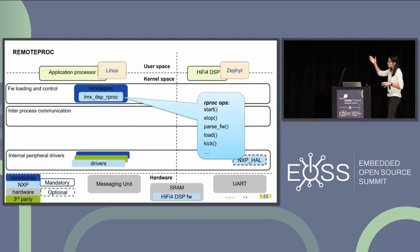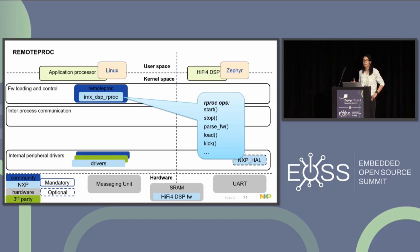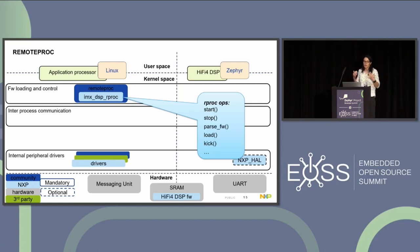We're going to use this diagram throughout the presentation — the application processor with Linux and the HiFi 4 with Zephyr — and discuss the frameworks used on each horizontal. For firmware loading and control, we have the generic Remote Proc driver. This has a set of callbacks used to start or stop the core, load the firmware, parse it to set associated resources like IPC or memory, and also callbacks to kick — to notify the coprocessor when messages are available between the two cores. Next, we have the IMX DSP RProc driver, which is platform-specific and implements callbacks for specific hardware resources like registers, clocks, and memory.